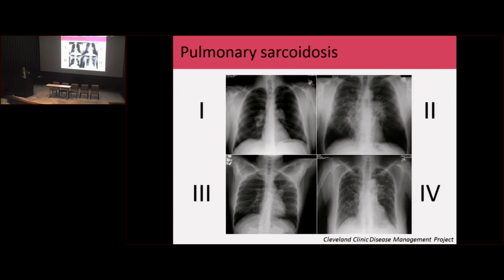This x-ray, by itself, can tell me which patients will most likely get better — for example, patients with stage one. But as Kelly was saying, we actually shouldn't assume it will get better; we should take it seriously and treat with medications. Stage two and stage three are manifestations of sarcoidosis that are harder to resolve, and we have to treat them appropriately.